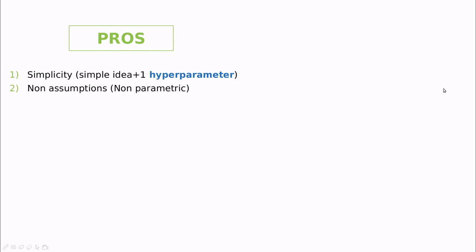The second one is that we have not any assumptions. So this is what they call a non-parametric model, in the sense that we are not assuming that the data is Gaussianly distributed or something like that. So the only assumption is that we have a choice for the distance.